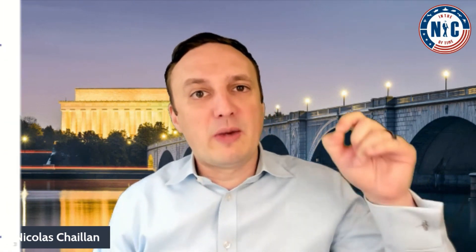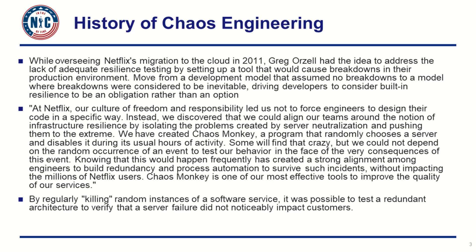Here's what he said: "At Netflix, our culture of freedom and responsibility led us not to force engineers to design their code in a specific way. Instead, we discovered that we could align our teams around the notion of infrastructure resiliency by isolating the problems created by server neutralization and pushing them to the extreme. We have created Chaos Monkey, a program that randomly chooses a server and disables it during its usual hours of activity. Some will find that crazy, but we could not depend on the random occurrence of an event to test our behavior in the face of the very consequences of this event. Knowing that this will happen frequently has created a strong alignment among engineers to build redundancy and process automation to survive such incidents without impacting the members of Netflix users."